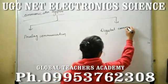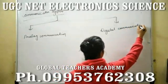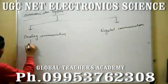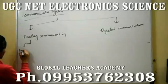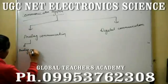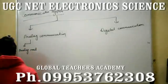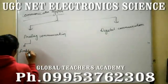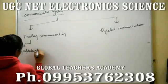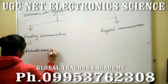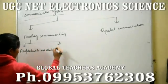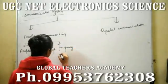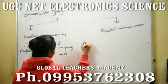Analog Communication has three parts: Analog Modulation, which includes Amplitude Modulation, Frequency Modulation, and Phase Modulation.